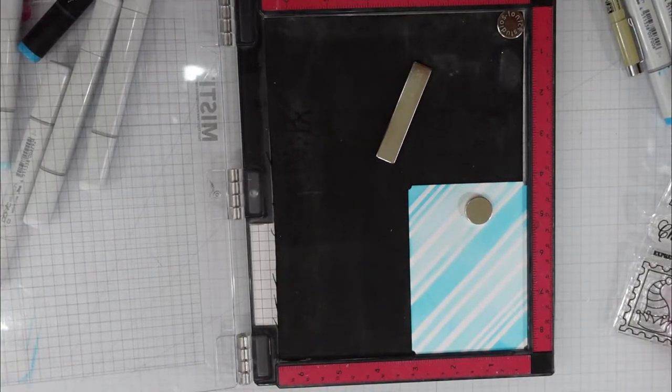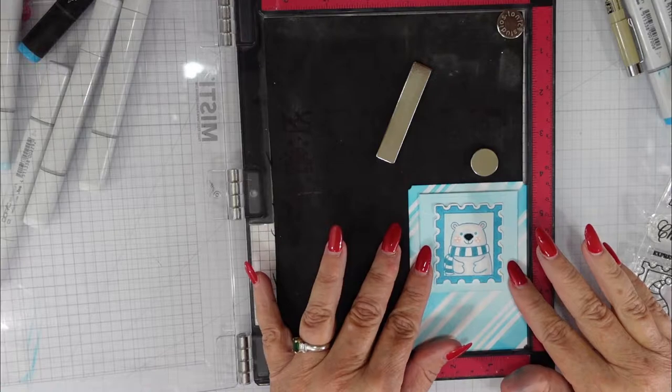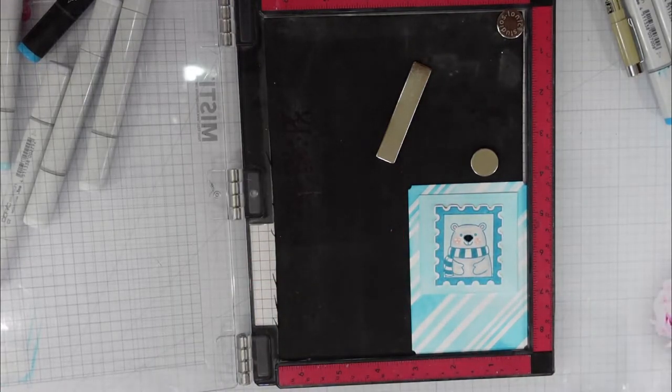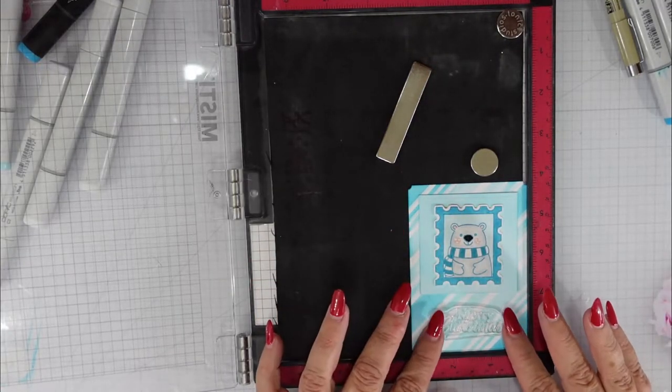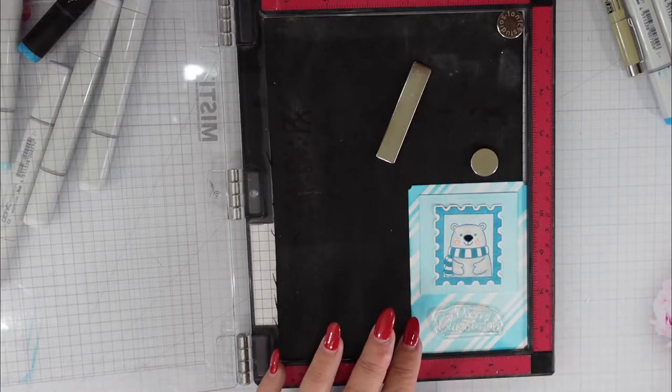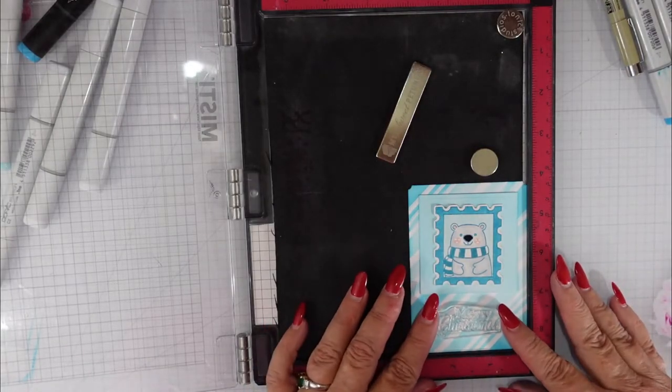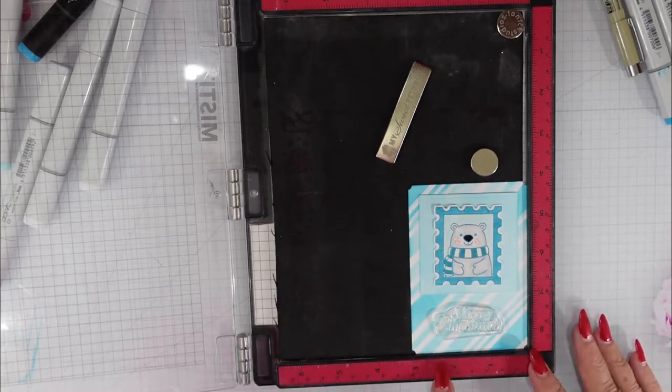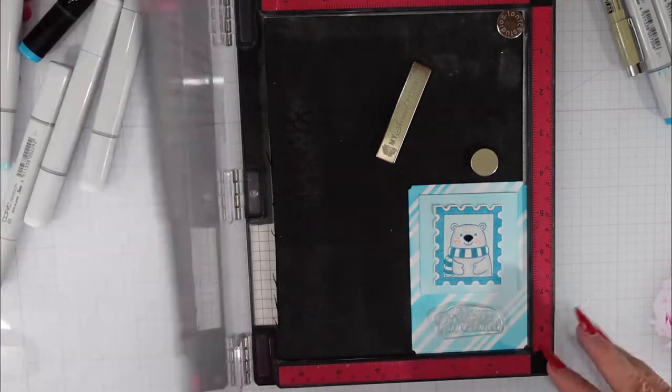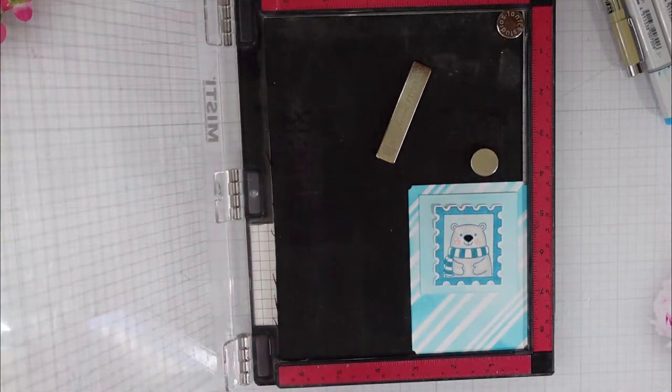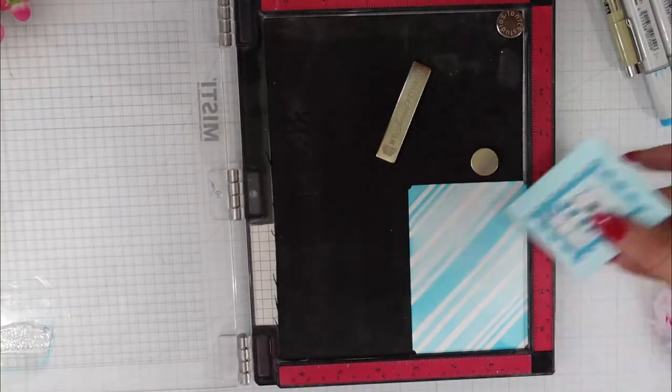So there's that candy stripe panel, as you can see. I'm going to add the bear to the square panel, and then I'm going to place that more towards the upper middle of that candy stripe panel. And I want to place my sentiment here, so I am using one of the sentiments from the stamp set.